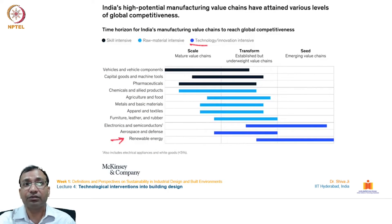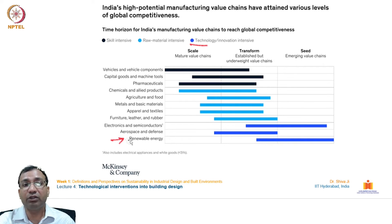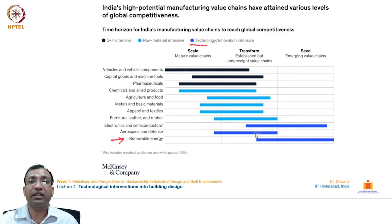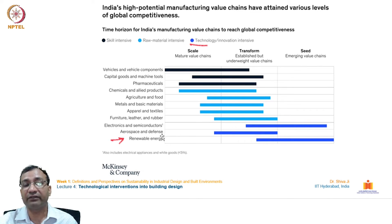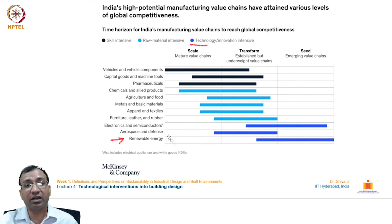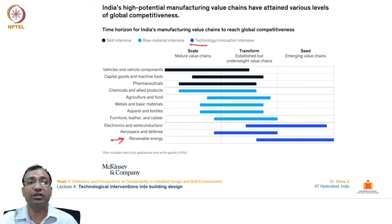India's high-potential manufacturing value chains have attained various levels of global competitiveness recently. Even in renewable energy generation, India has pioneered its technology and education and is now one of the pioneering countries working in this area. In aerospace and defense — conventionally reserved only for government-sector companies — the government has recently opened this critical sector to private players, who can design, develop, and mass produce defense products for the Indian military.